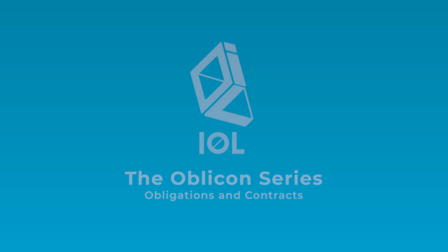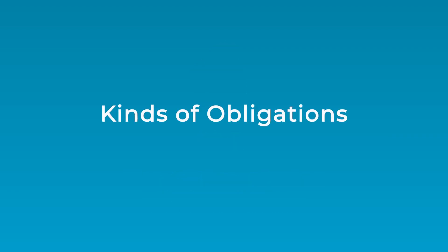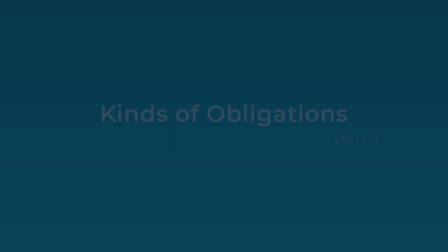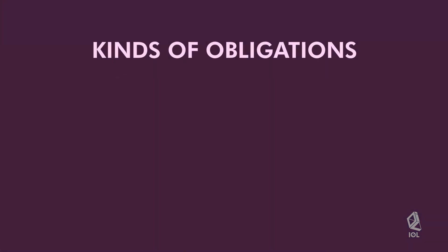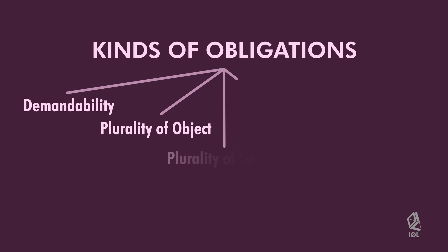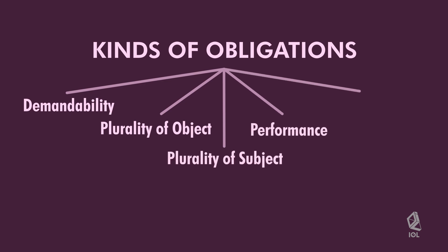We are in Chapter 3 of Obligations and Contracts. I am very excited to learn new topics with you. So what are you waiting for — grab your notebooks and pens. Basically, we classify obligations according to demandability, plurality of object, plurality of subject, performance, and sanction for breach.